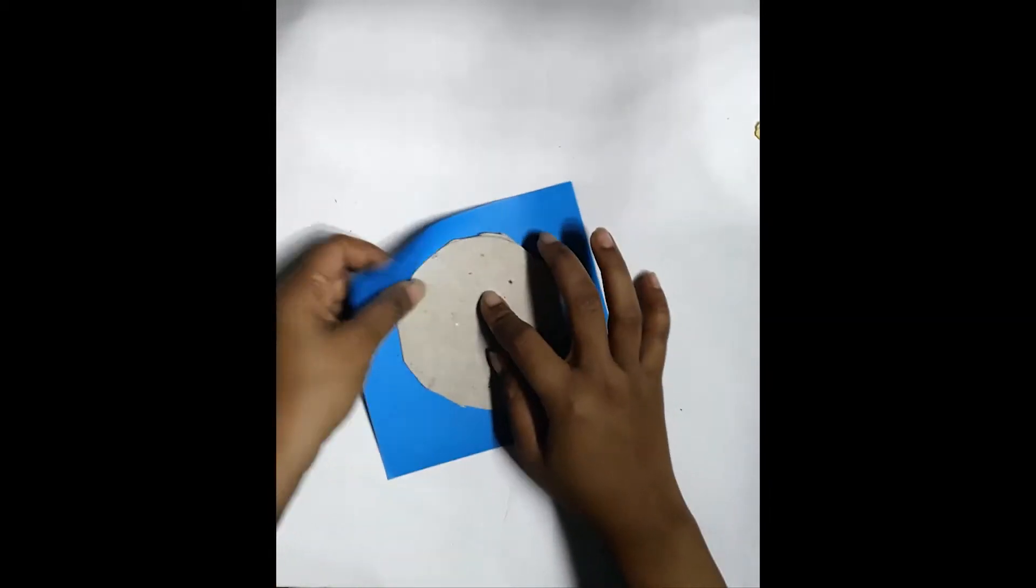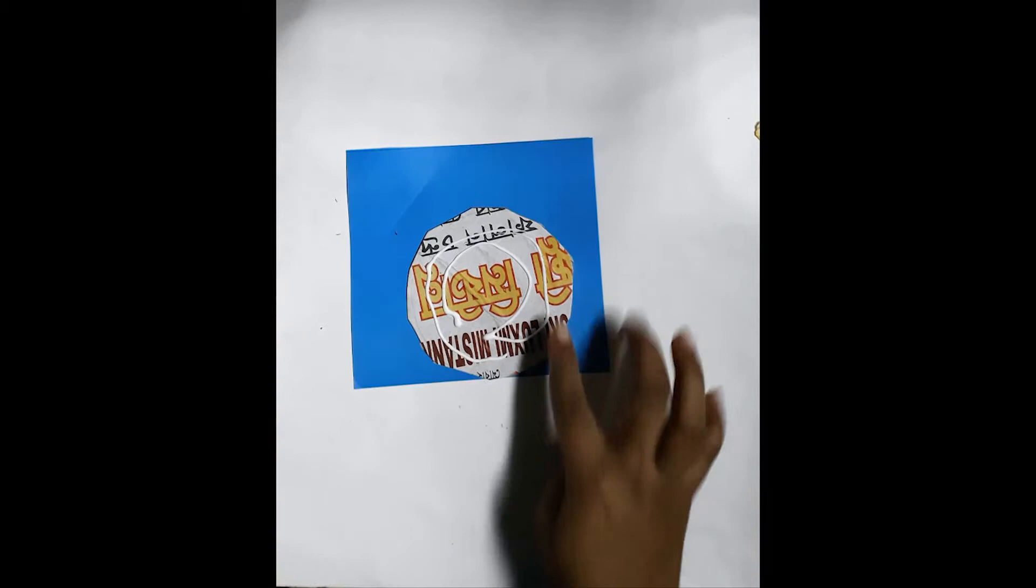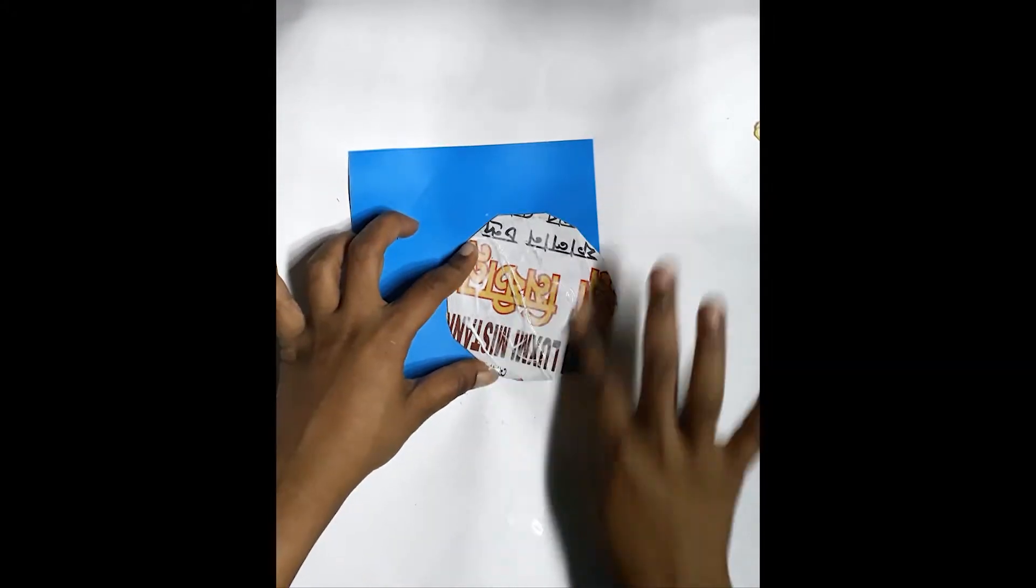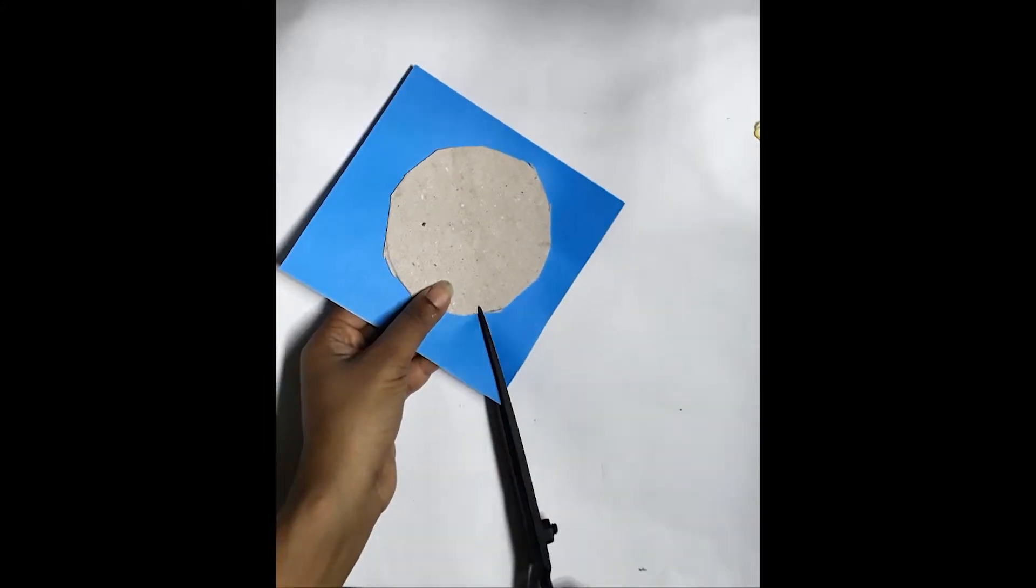Take the circle paper and put it on the blue sized paper. Now glue its backside properly and attach it on the blue shaped paper. Now cut its 8 corners by scissor.